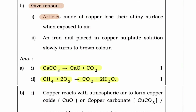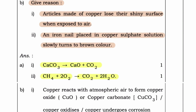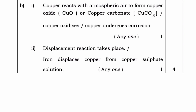Question B — Give reason: Articles made of copper lose their shiny surface when exposed to air. An iron nail placed in copper sulfate solution slowly turns brown in color. Answer: Copper reacts with atmospheric air to form copper oxide (CuO) or copper carbonate (CuCO₃) — copper undergoes corrosion. And for the iron nail, a displacement reaction takes place and iron displaces copper from copper sulfate solution.